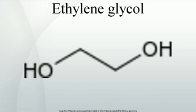Ethylene glycol is moderately toxic with an oral LDLO of 786 mg/kg for humans. The major danger is due to its sweet taste, which makes children and animals more inclined to consume large quantities of it than of other poisons. Upon ingestion, ethylene glycol is oxidized to glycolic acid, which is in turn oxidized to oxalic acid, which is toxic. It and its toxic by-products first affect the central nervous system, then the heart, and finally the kidneys. Ingestion of sufficient amounts can be fatal if untreated.